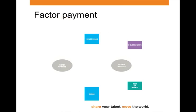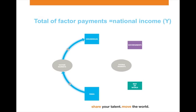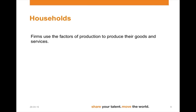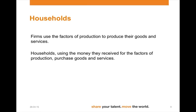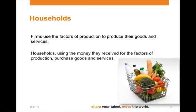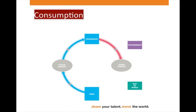If we look at our circular flow of income, we'll see that the factor payments from firms to households are also referred to as national income. Firms use the factors of production to produce their goods and services. Households, using the money they receive for the factors of production, purchase these goods and services. This is what we call consumption. In our circular flow of income, there's a flow from households via the goods market to firms, indicated by a C.